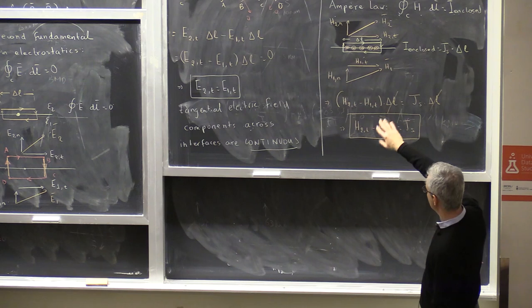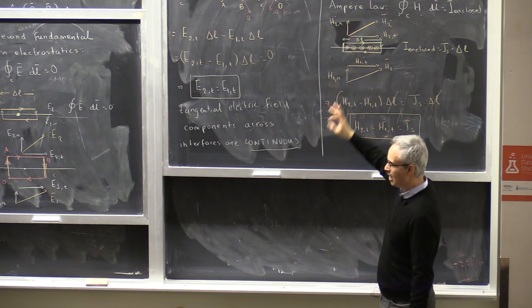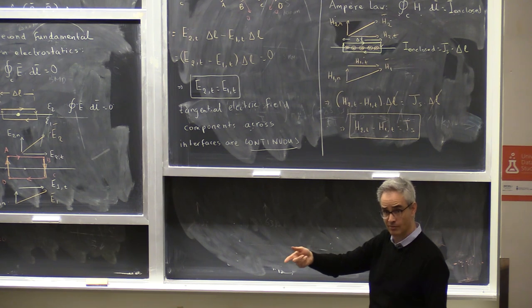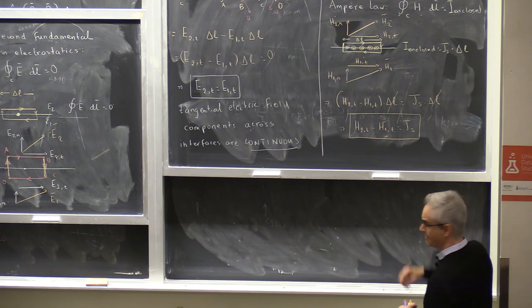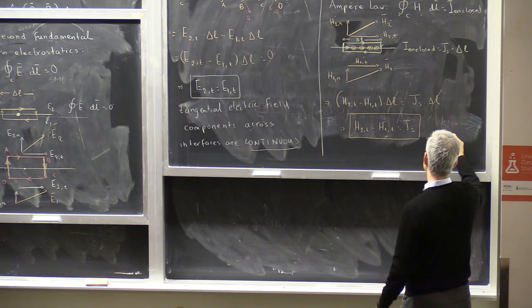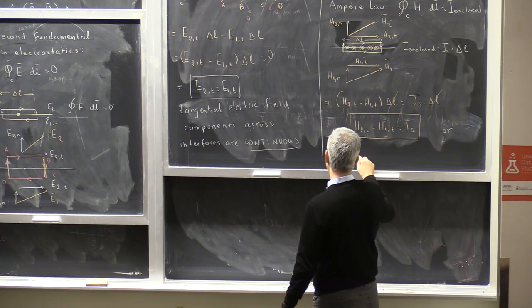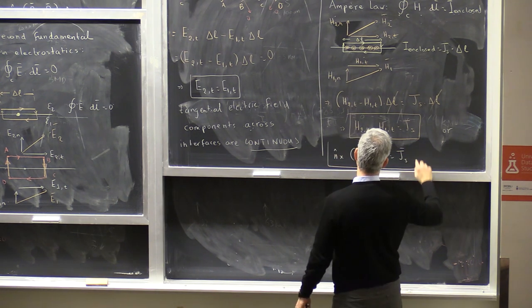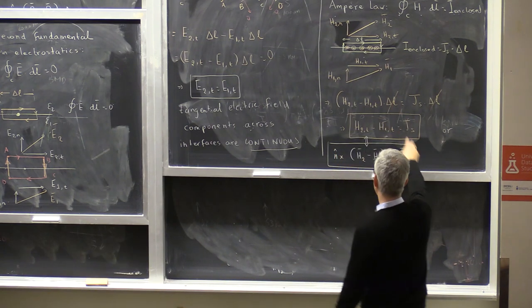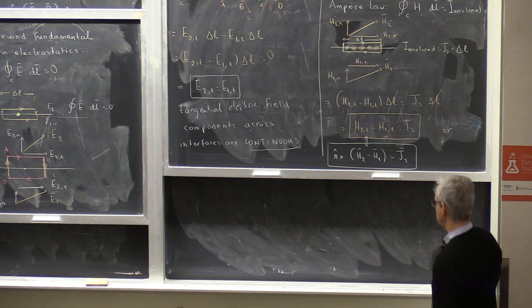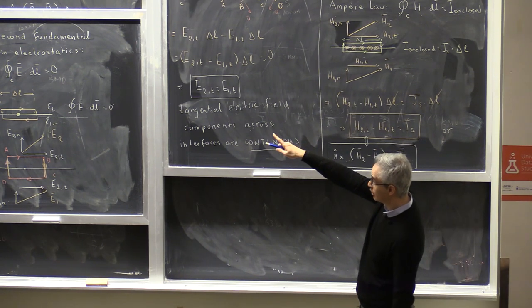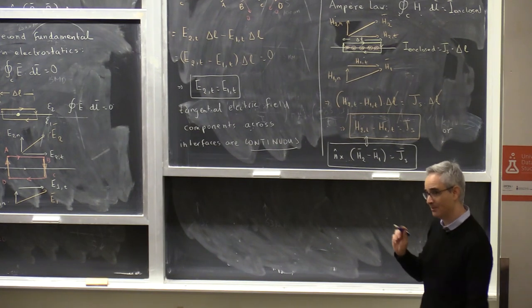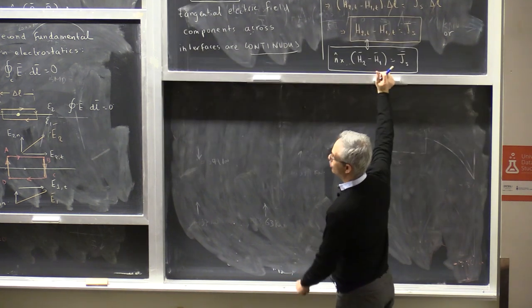The rigorous way to write the same condition without worrying about signs is: n-hat cross (H2 minus H1) equals J sub s. This is a cross product, not a dot product like in Gauss's law. You see the electric and magnetic cases have similarities and some differences—some duality between the two cases.